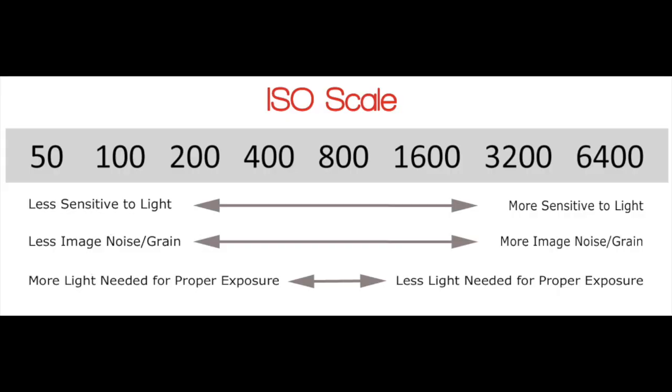ISO is just a kite mark, an industry standard. Specifically it relates to film speed — it deals with how sensitive to light those pixels are. The first thing to remember is that all three elements of exposure — ISO, shutter speed, and aperture — all have control over how much light enters the camera.